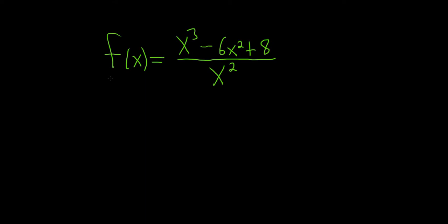In this problem, we have to find the derivative of this function. So we have a fraction, so the quotient rule might be the first thing that comes to mind. However, whenever you have a fraction like this and you have a single term on the bottom like this — so whenever you have a monomial —